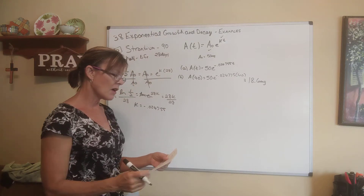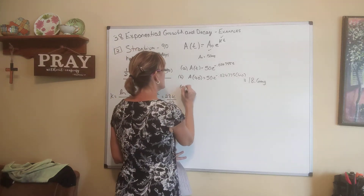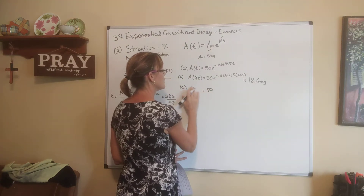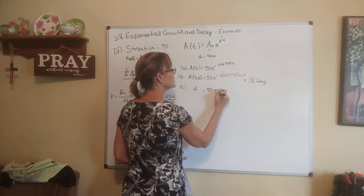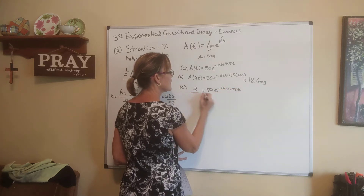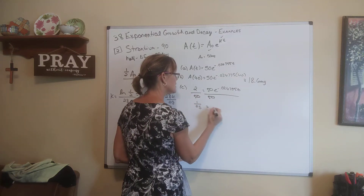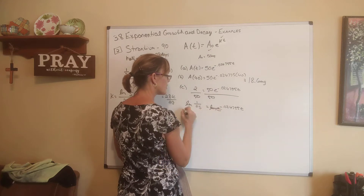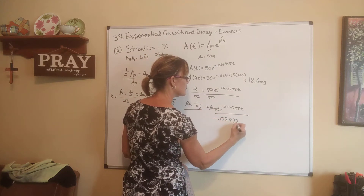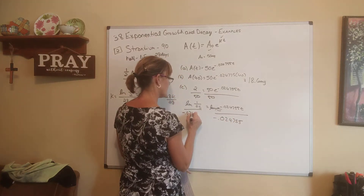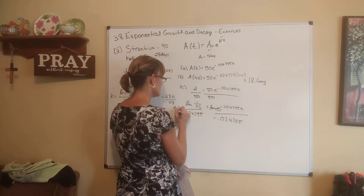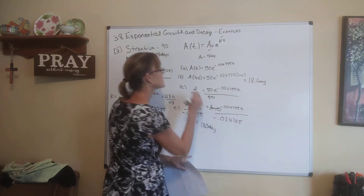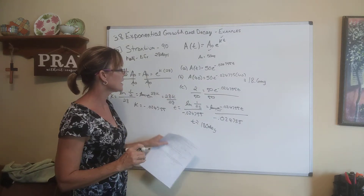For part c, it says how long does it take for the sample to decay to 2 milligrams. Two milligrams is the amount we have left after some time has passed. So A(t) equals 50 e to the negative 0.024755t, and we solve for t. Divide both sides by 50 — we get 1/25 equals e to the negative 0.024755t. Unlock this exponential with a natural log, then divide both sides by negative 0.024755. We get t is about 130 days — that's how long it takes for 50 milligrams to decay down to 2 milligrams.